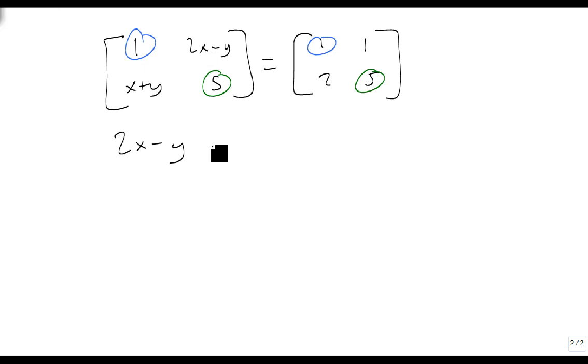Well, we know that 2x minus y is equal to 1, and we know that x plus y is equal to 2. Well, this turns into a system of equations. I like the system as it is right now. I'll just add them together, do elimination. 2x plus x is 3x minus y plus y is 0y, equals 1 plus 2 is 3, so x equals 1.